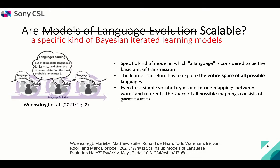I want to argue, however, that the title of this study is quite misleading, because instead of models of language evolution in general, they write actually about a specific kind of Bayesian iterated learning model.